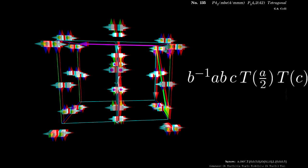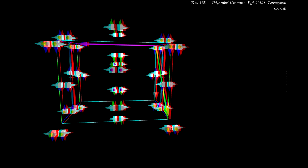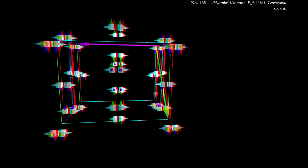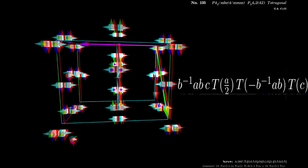Similarly we have the same screw with an additional translation by C minus B inverse AB and C and minus B inverse AB.